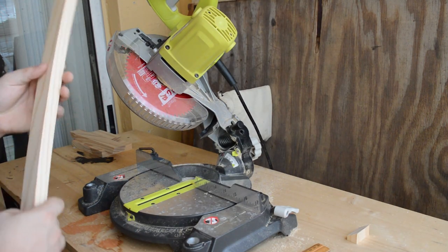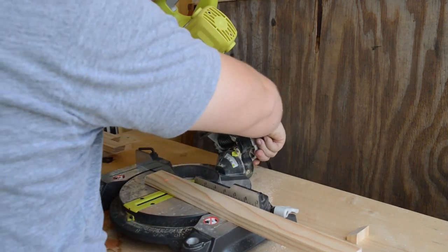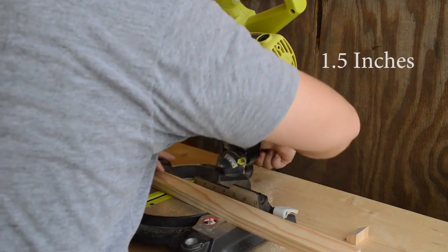For this one, let's grab the same piece of wood since it already has that 30-degree angled cut and measure one and a half inches and cut it straight.